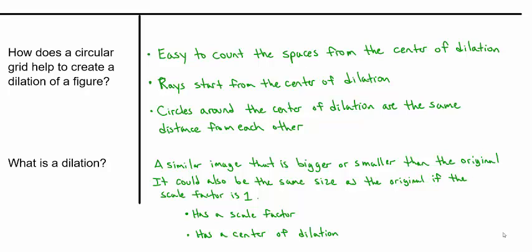Let's take some notes. How does a circular grid help create a dilation of a figure? It's easy to count the spaces from the center of dilation so we can figure out the scale factor. The rays start from the center of dilation, and the circles around the center are all the same distance from each other, making it easy to count. When we create a figure using a center of dilation and a scale factor, it makes a similar image — a scaled copy that is either bigger or smaller than the original, but could also be the same size if the scale factor is 1. Dilations always have a scale factor and a center of dilation.